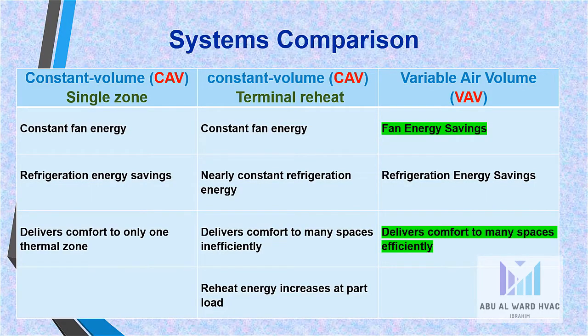In the system comparison: the normal CAV single zone has constant fan energy and refrigeration energy savings but delivers comfort to only one thermal zone. The terminal reheat CAV has constant fan energy and nearly constant refrigeration energy, delivers comfort to many spaces, but reheat energy increases at part load, which is a loss. The VAV system offers the best fan energy savings, the best refrigeration energy savings, and delivers comfort to many spaces efficiently — making VAV the best system among the three.